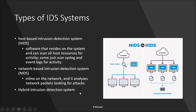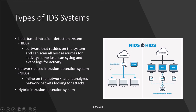There are basically three types of intrusion detection systems: network-based, host-based, and hybrid. In a network-based IDS, a packet scanner sits between the internet and your private systems, scanning all incoming packets on the network itself before they reach the private systems.